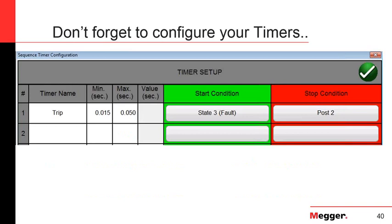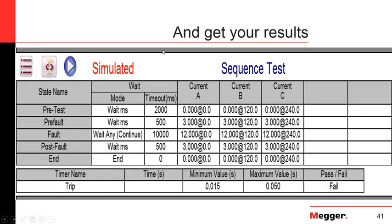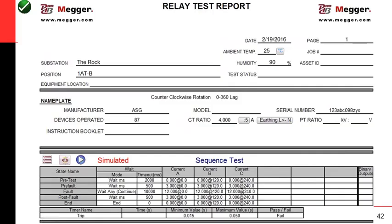You need to configure your timers. This timer will begin in state number three — the moment the fault is applied. The stop condition of the timer will be binary input number two, which listens to the tripping of the relay. After that, all you need is to get your results and, of course, get the test report. Testing is about ensuring the reliability of the system, and for the engineer it also means having the test report automated if possible.